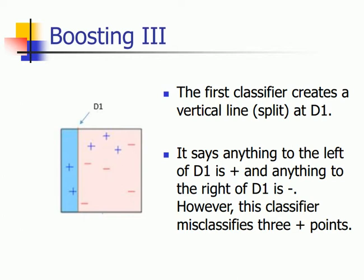I start off with 10 data points, 5 of which are positive and 5 of which are negative. I build a first classifier which creates a vertical line at point D1. It says anything to the left of D1 is positive, anything right of D1 is negative. However, if you can carefully see, you have 3 positives being misclassified as negatives.